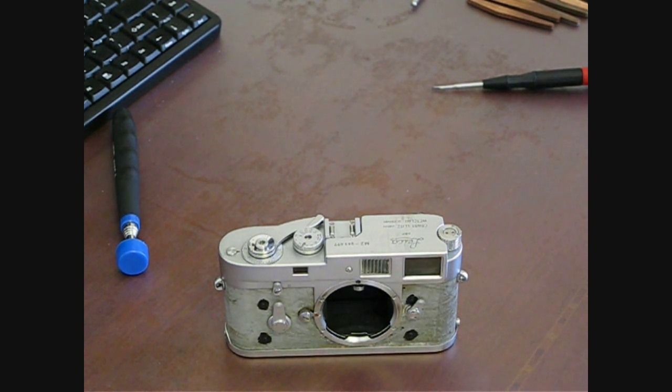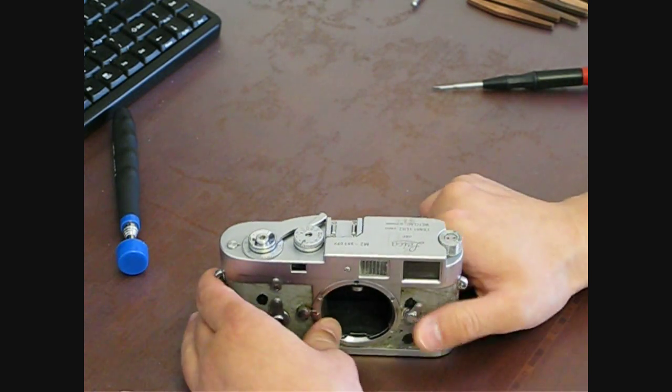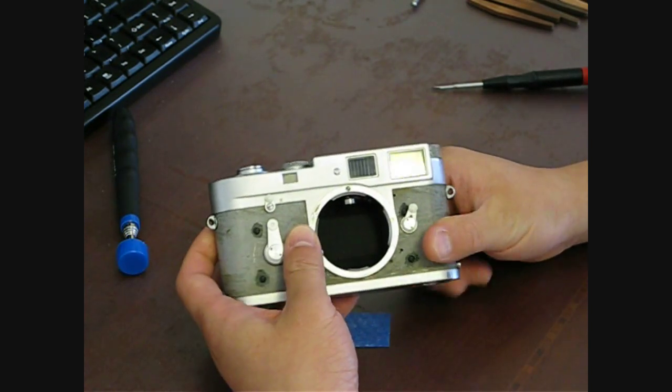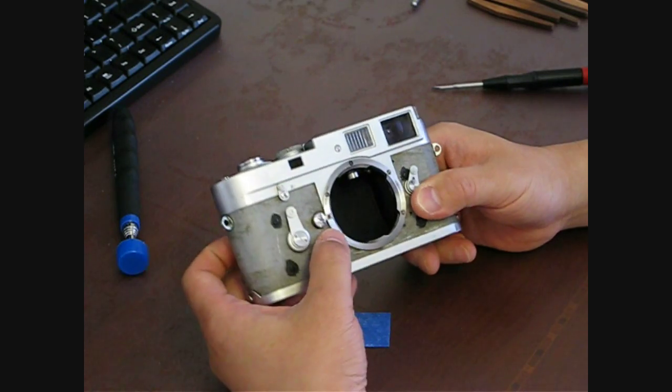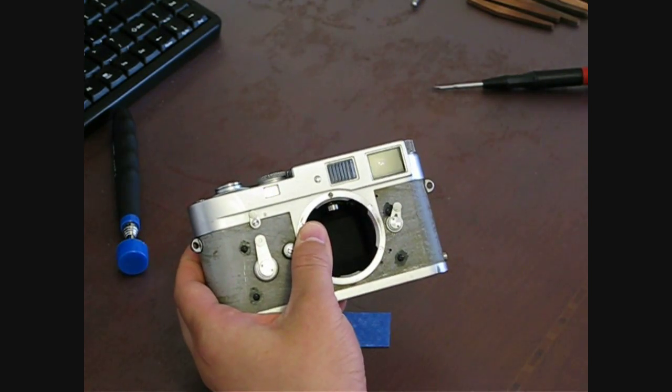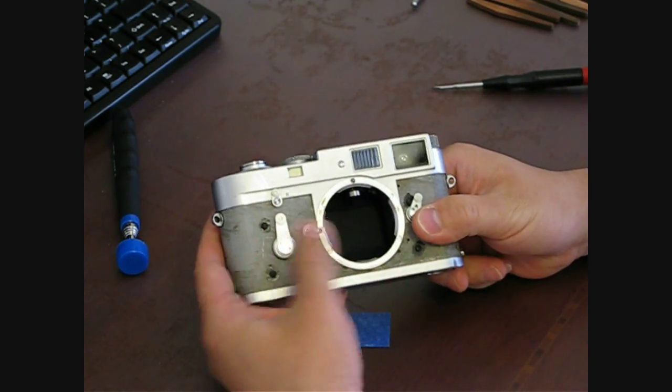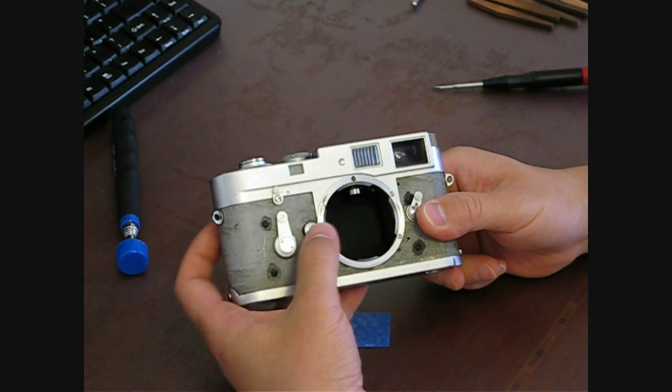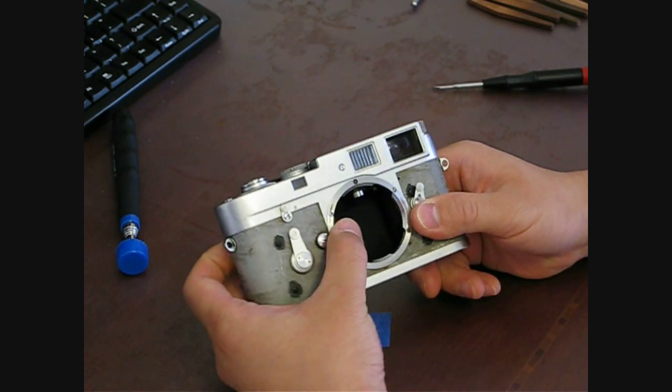This video is to remove a Leica M2 top plate. I'm going to show you how that looks inside. This is a Leica M2. The Vulcanite has been removed because it was chipping away. We're going to go ahead and remove the top plate.